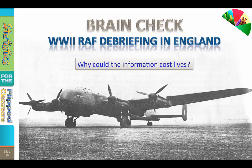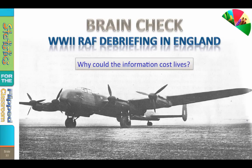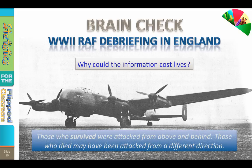But as the corporal is leaving the dimly lit Quonset hut, a hand reaches from the inky shadows and says, stop — that information may cost lives. So what is wrong with that information? This is an example of sampling error. The lieutenant is asking the wrong people. What does he really want to know? From which direction did the fatal attacks come? But all we know is that those who survived and returned were attacked from above and behind. Those who died may have been attacked from a different direction, which is why those attacks were fatal.